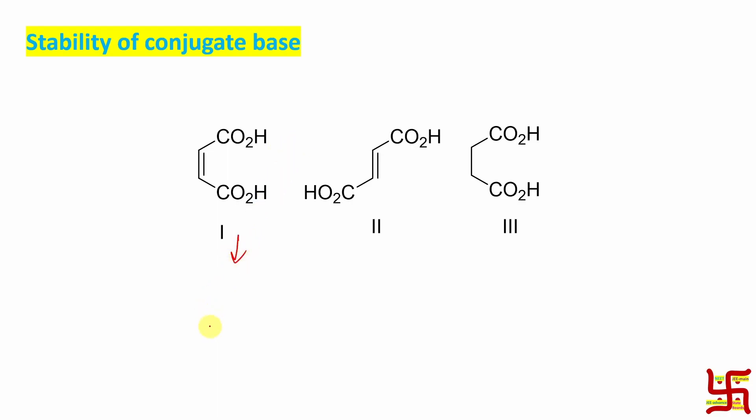See, this is all are actually dicarboxylic acid or four carbon containing dicarboxylic acid. So carboxylic acid means this O-. Now here also another OH is there. This is the conjugate base and this is fumaric acid.